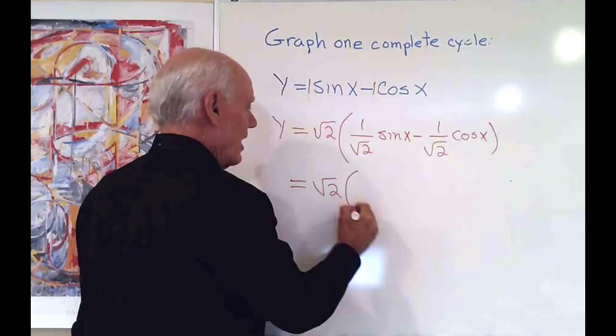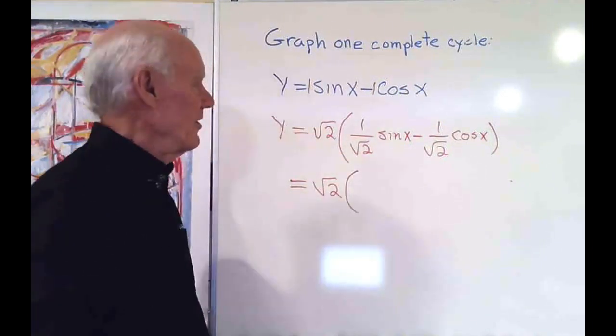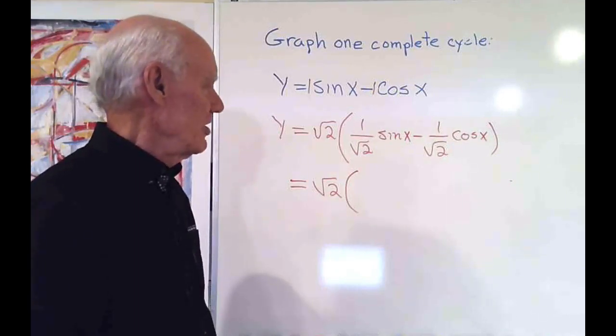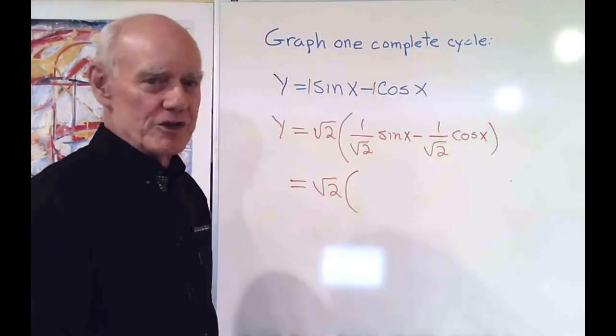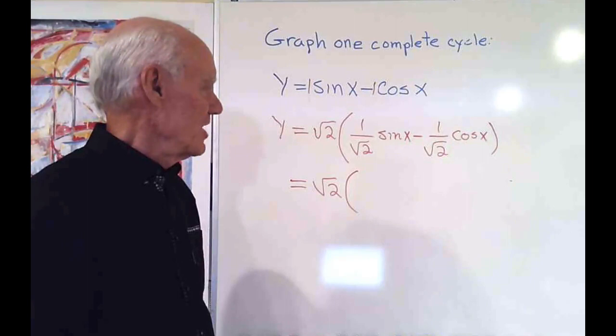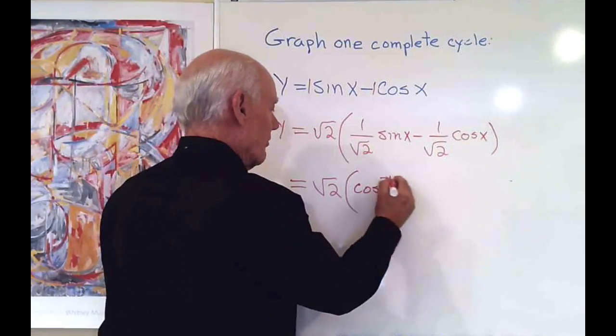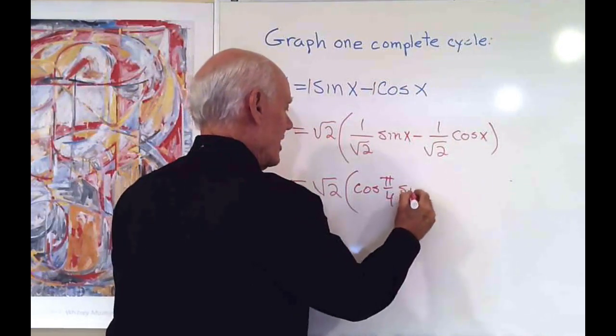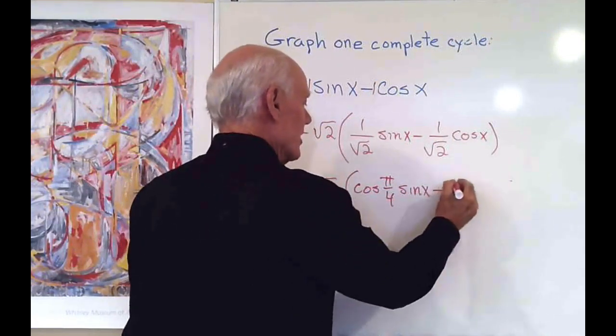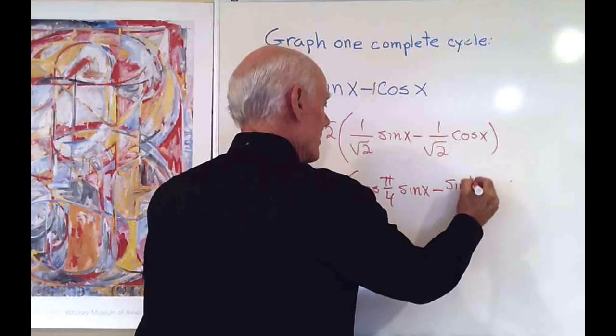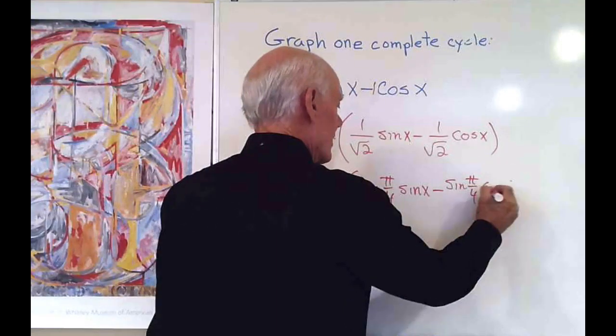Then I say, this is square root two times, what angle has a cosine of one over square root two? And that turns out to be pi over four.